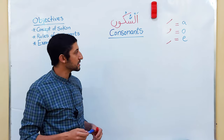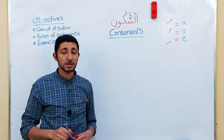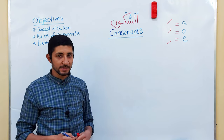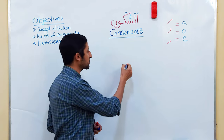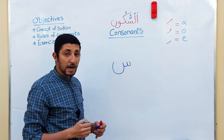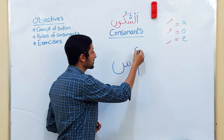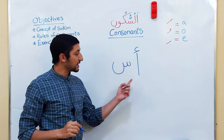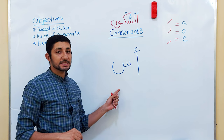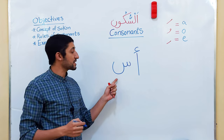In the previous lesson, I already mentioned that whenever you want to get the consonant sound of any Arabic letter, just add Alif before this letter. Let's say I want to get the consonant sound of this letter. I will add only A or Alif before it. Now read them together — S. So this is the consonant sound, or the pure sound, of this letter.